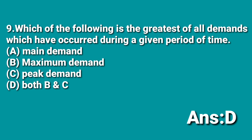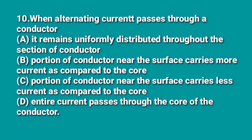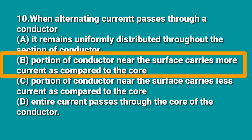The tenth question: when alternating current passes through a conductor, some portion of the conductor near the surface carries more current compared to the core — B is the correct answer. When AC passes through a conductor, the total conductor is not fully utilized because of the skin effect. DC distributes current uniformly, whereas with AC some portion near the surface carries more current — that is also called skin effect.